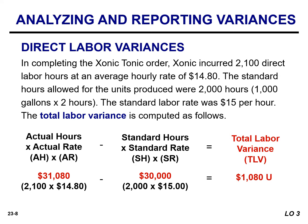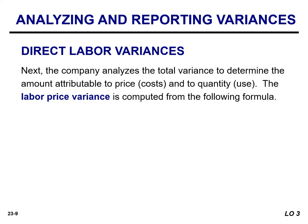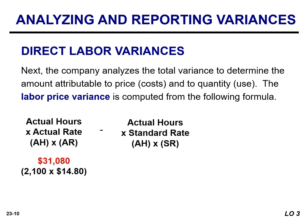This variance is caused by differences in the labor rate, or differences between the actual number of labor hours and the number of labor hours that should have been worked for the quantity produced. We need to calculate both a labor price variance as well as a labor quantity variance. The labor price variance results from the difference between the rate paid to workers versus the rate that was supposed to be paid. In this example, the actual amount paid was $31,080.